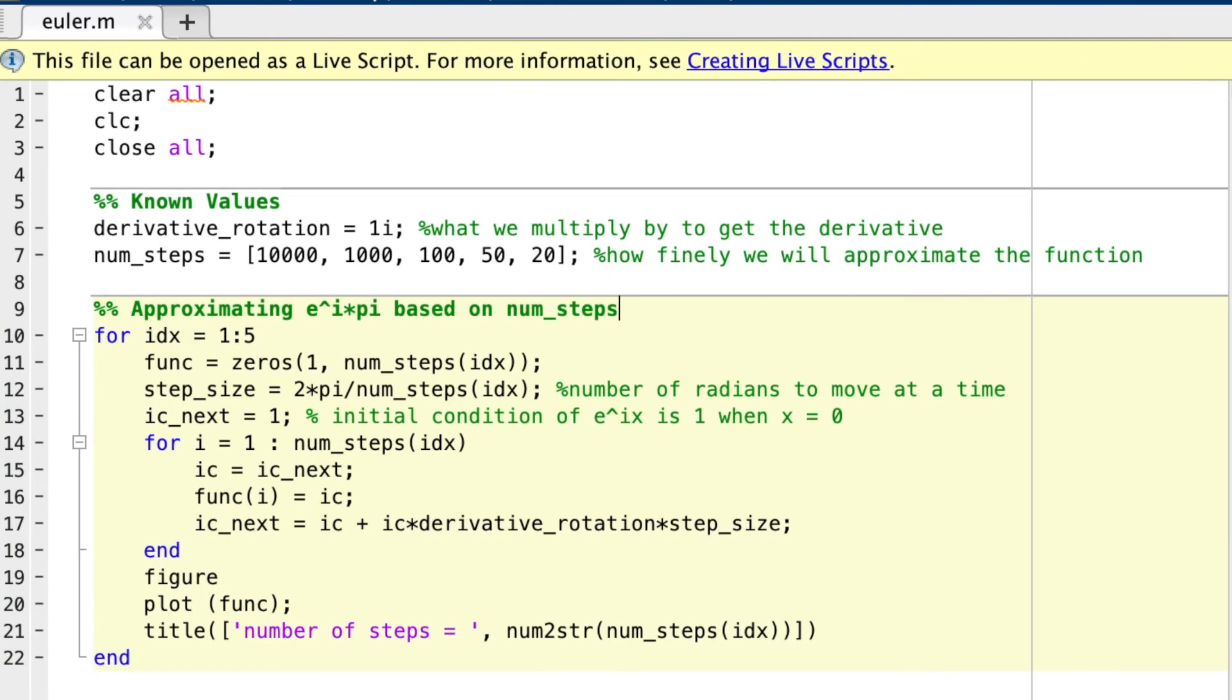Okay, I have some MATLAB code here, and I think it's a really good exercise to understand e to the ix and why e to the ix is going to move around a unit circle in the complex plane. We know the derivative of e to the ix is i e to the ix, and that means that if we want to take an instantaneous derivative for any point x, we just multiply the value by i.